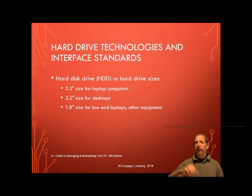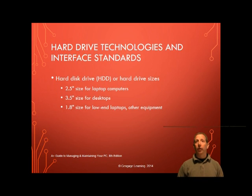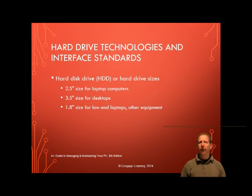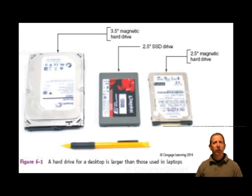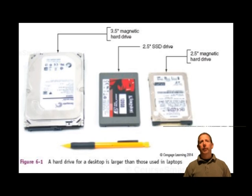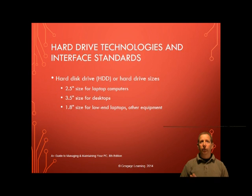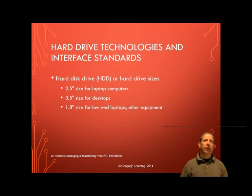Let's start off with the hard drive technologies and interface standards. The hard disk drive, also known as the HDD, most often called a hard drive, comes in two sizes for personal computers. The 2.5 inch size is used for laptop computers and the 3.5 inch size is used for desktops. In addition, a smaller 1.8 inch size hard drive about the size of a credit card is used in some low-end laptops and other equipment like MP3 players.